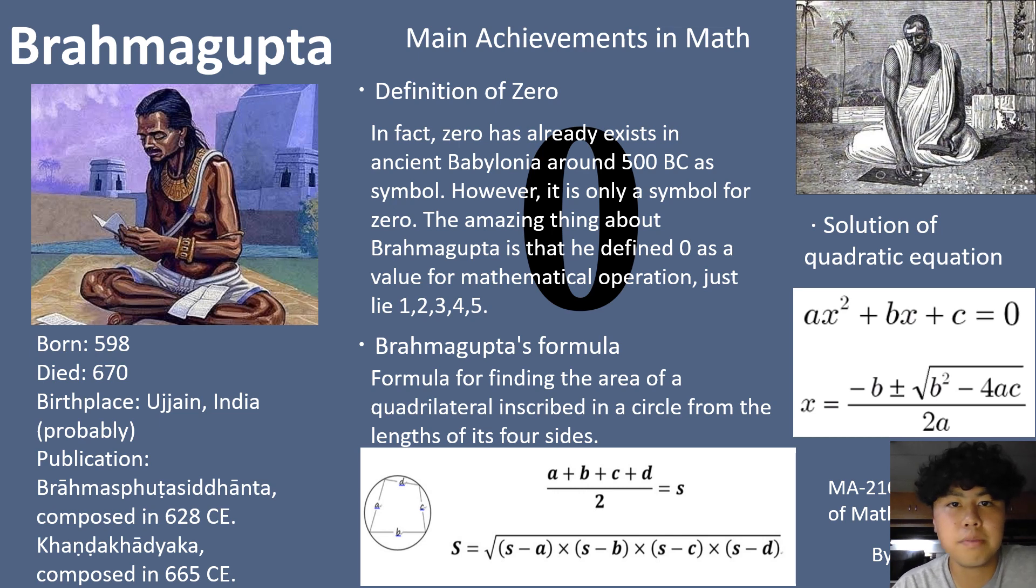Today, a presentation about Brahmagupta. He is the greatest of the ancient India mathematician because he was the first to show how to use the zero as a number and made many other important discoveries in algebra and geometry.